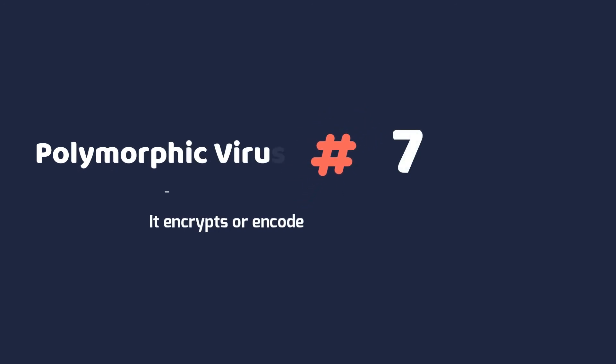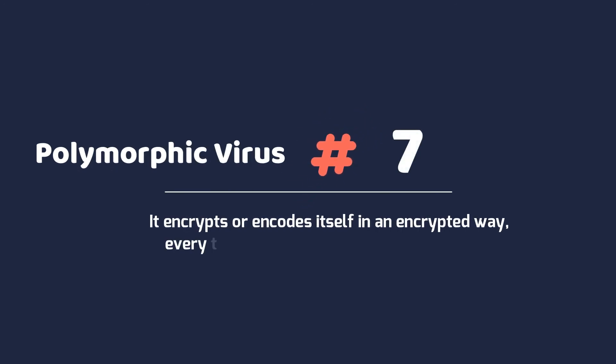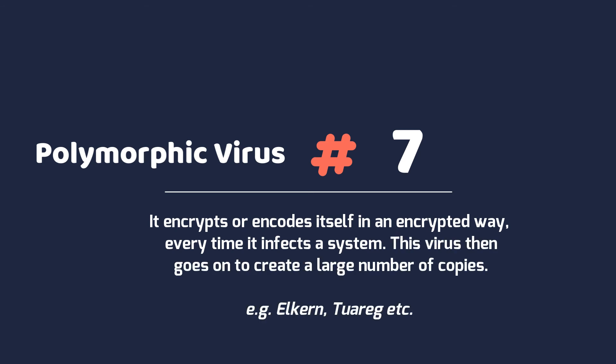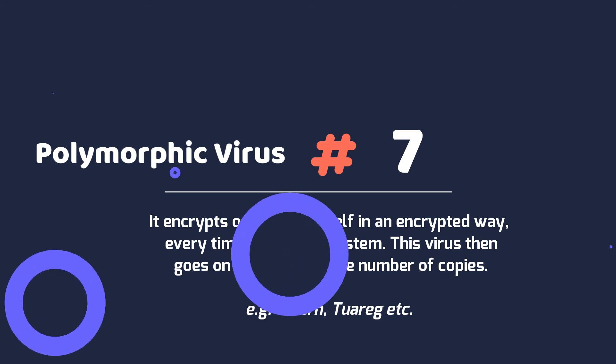7. Polymorphic virus. It encrypts or encodes itself in an encrypted way every time it infects a system. This virus then goes on to create a large number of copies. For example, Elkern, Tuareg, etc.